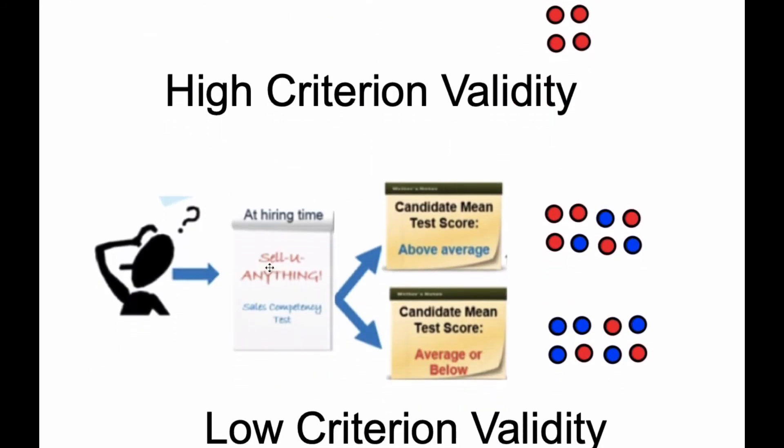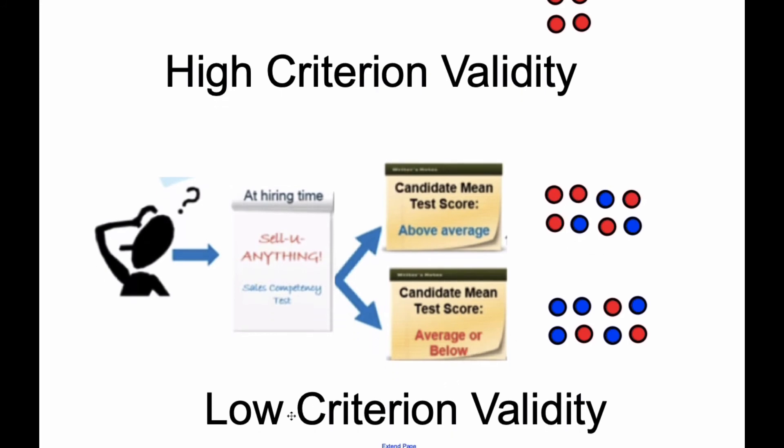However, if I gave the test, and people who got above average and then below average, if the above average people, if some were the superstar employees and some were not, the same with here, then we would say there was low criterion validity, because it was not a very good predictor of how these salespeople would do.